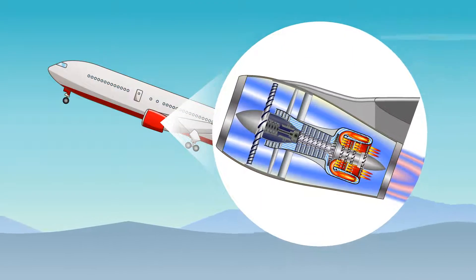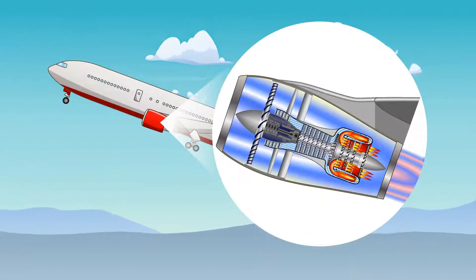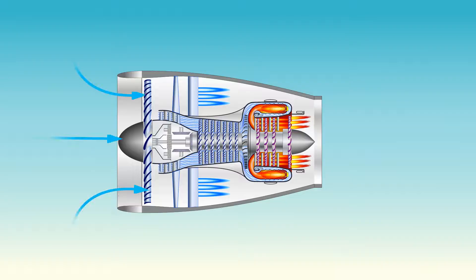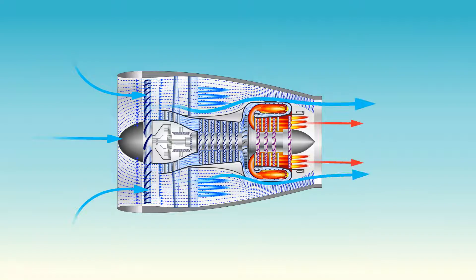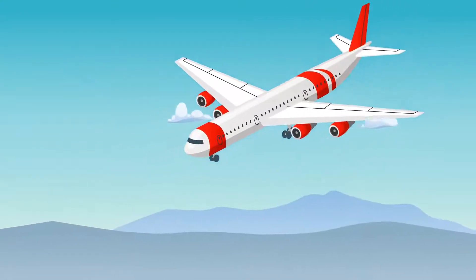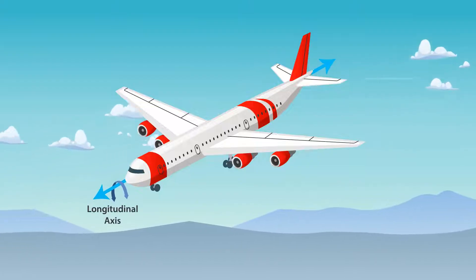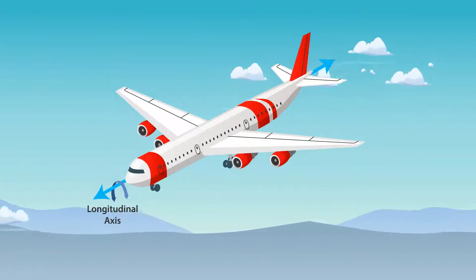Thrust — the forward force produced by the power plant, propeller, or rotor. It opposes or overcomes the force of drag. Most often, it acts parallel to the longitudinal axis, but not always.